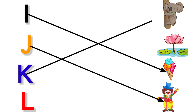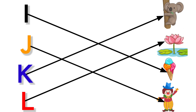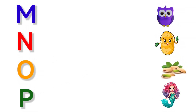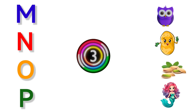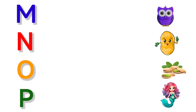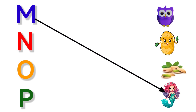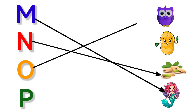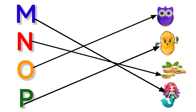K for Koala, L for Lotus, M for Mermaid, N for Nuts, O for Owl, P for Potato.